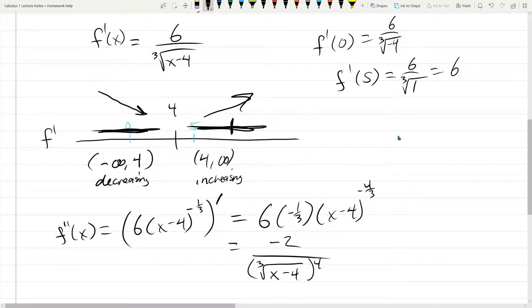Because remember, powers of powers are products. So if you think about negative 4 thirds, you could write it as negative 1 third times 4. So you could do the 1 third power and then the fourth power.